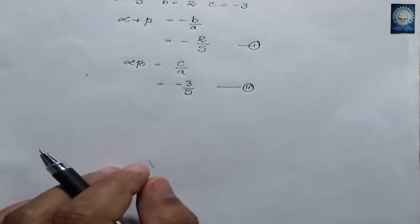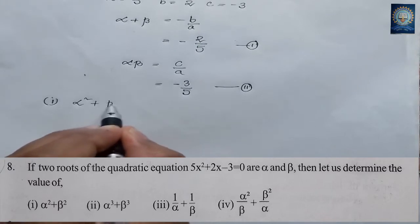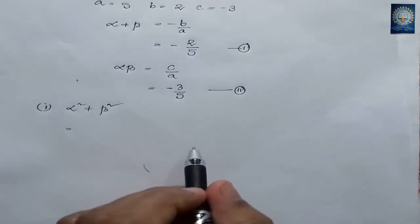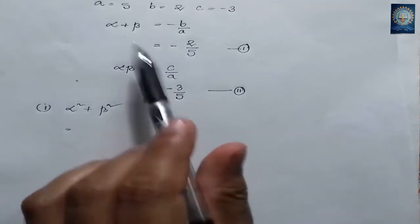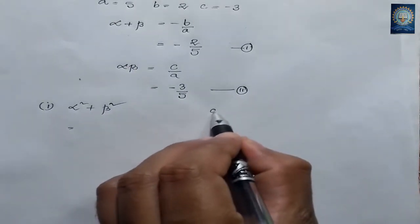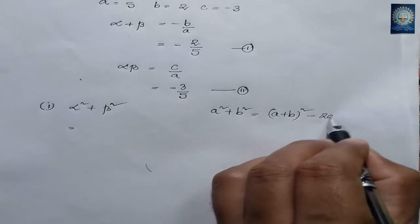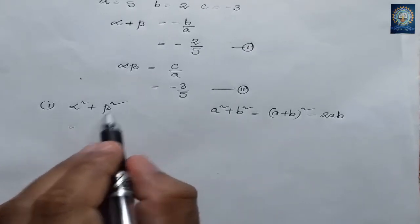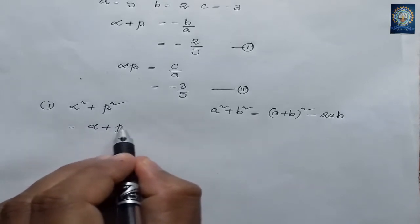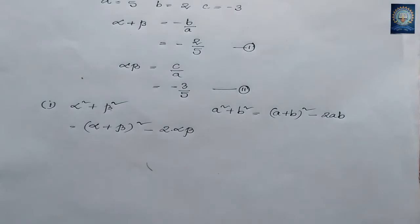Now we have to find the value of alpha² + beta². We use the identity: a² + b² = (a + b)² - 2ab. Substituting alpha and beta: alpha² + beta² = (alpha + beta)² - 2·alpha·beta.